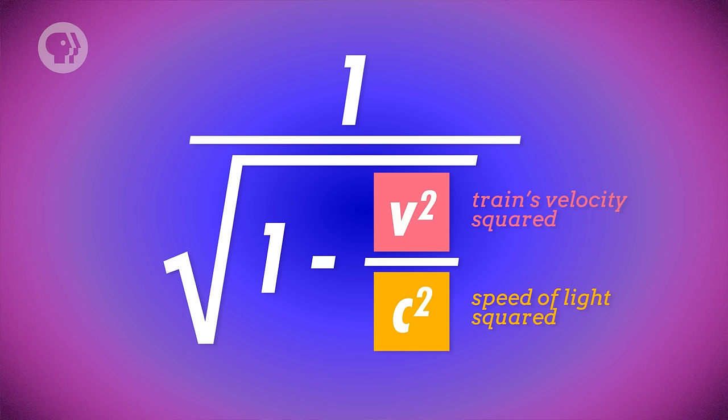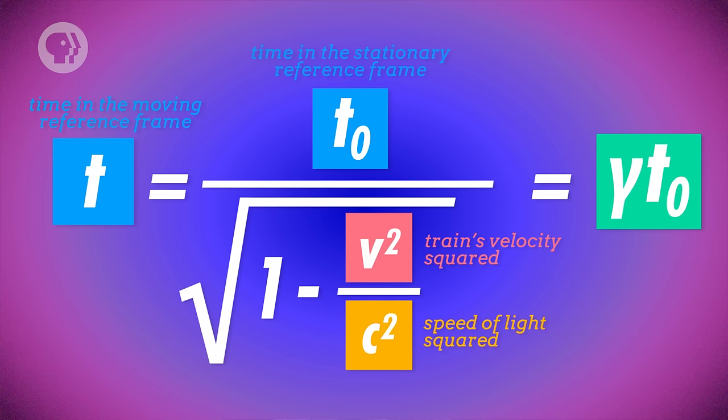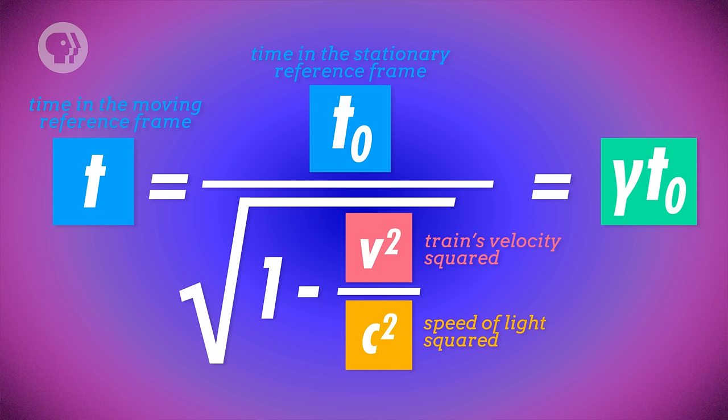If you measured the distance the light was traveling from your perspective on the platform, you'd calculate that time slowed down for Bob by a factor of 1 divided by the square root of 1 minus the train's velocity squared divided by the speed of light squared. We'll call this factor gamma, and it applies to any situation where another inertial reference frame is moving relative to yours. Time in that moving reference frame will seem to equal time in your reference frame multiplied by gamma. Gamma always has to be greater than 1, because the velocity of the moving reference frame always has to be less than c, the speed of light. So time is slower in that moving reference frame.